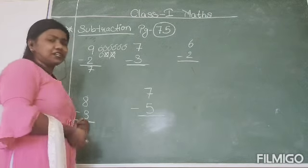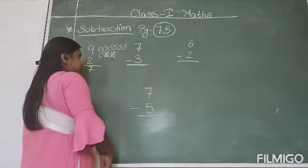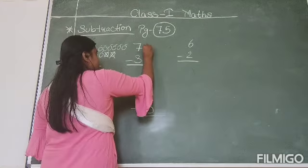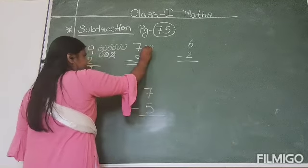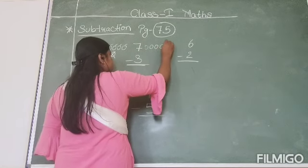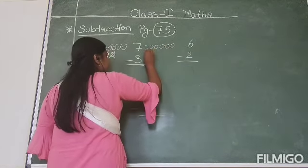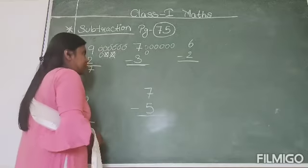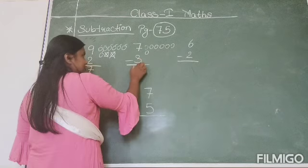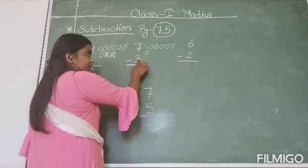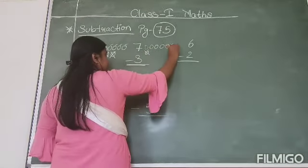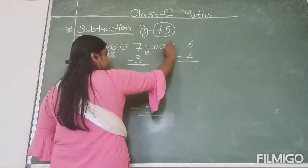Now let's continue with the same method. Your first number here is 7. So let's draw 7 circles — one, two, three, four, five, six, seven. We have drawn 7 circles. Now how many circles will we cut down? Let's see the second number. The second number is 3. So we will cut down 3 circles — one, two, three.